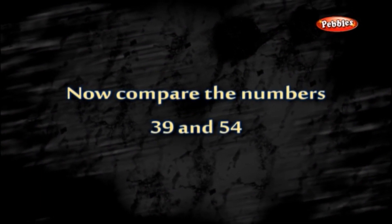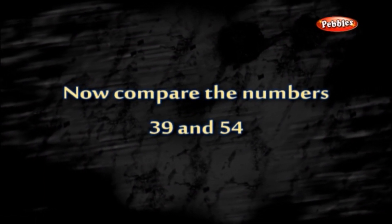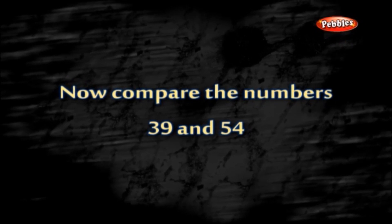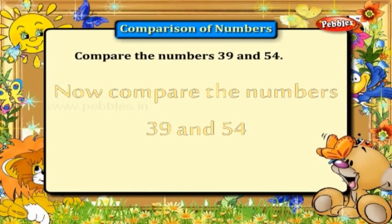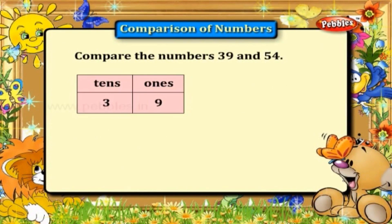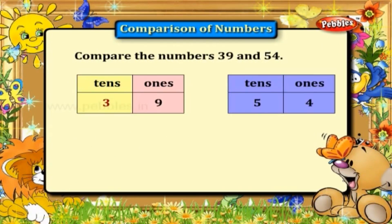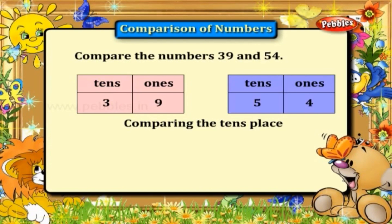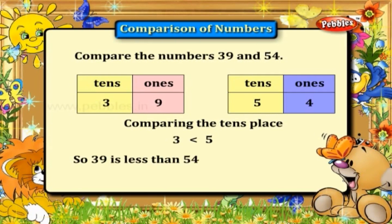Now compare the numbers 39 and 54. In 39, 3 is in the tens place, and in 54, 5 is in the tens place. Compare the tens place: 3 is less than 5. So 39 is less than 54.